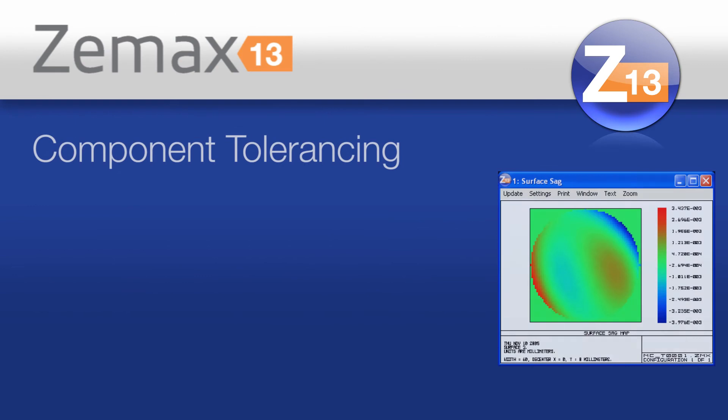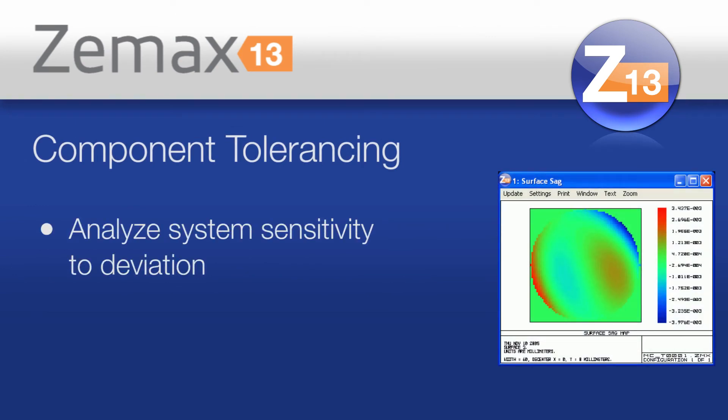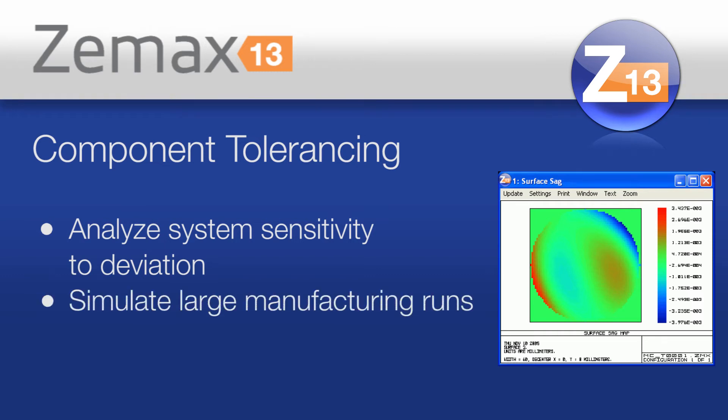And lastly there's tolerancing. It's one thing to design it on a computer; it's another thing to build it. ZMAX lets you include all the system-level tolerances and all the element-level tolerances, so that we can account for the fact that no two lenses are identical.